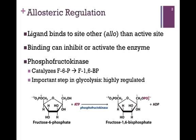Let's look at the example of phosphofructokinase. It catalyzes the conversion of fructose 6-phosphate to fructose 1,6-bisphosphate, as illustrated at the bottom of the slide. It transfers a phosphoryl group from ATP to that number one position to form the bisphosphate product. This is an important step in glycolysis, as we'll examine in more detail later in the semester, and therefore it is highly regulated.